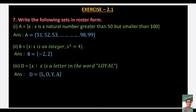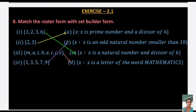Next: D = {x : x is a natural number and divisor of 6}. Also, the letters of the word LOYAL — L, O, Y, A — so D = {L, O, Y, A}. Question 8: Match the roster form with the set builder form. {1, 2, 3, 6} matches 'x such that x is a natural number and divisor of 6'. {2, 3} matches 'x such that x is a prime number and divisor of 6'.